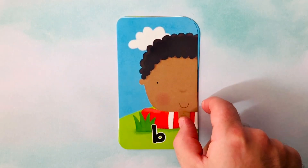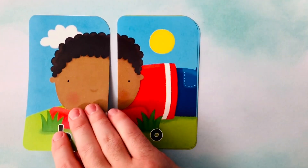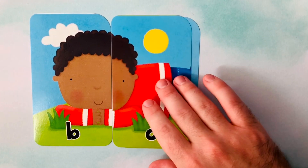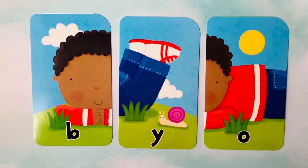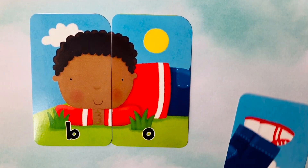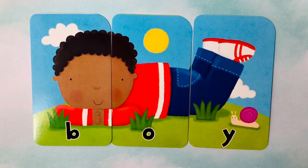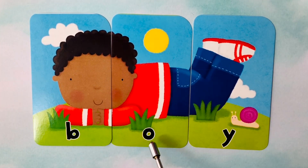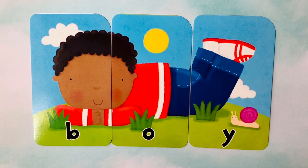Let's do another word. I see a B to begin. We also have an O. And our third letter is a Y. I think we're going to spell boy. Boy starts with the B, it follows with the O, and it finishes with the Y. B-O-Y spells boy.